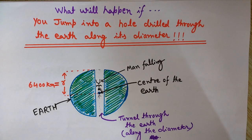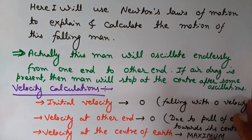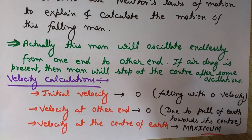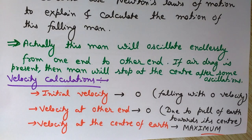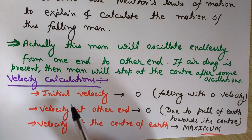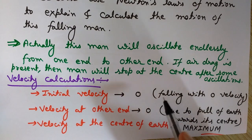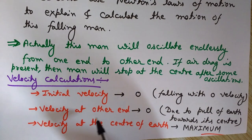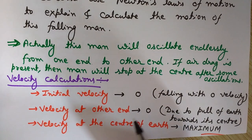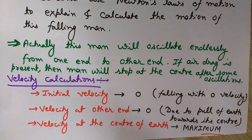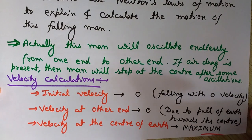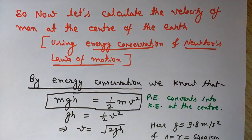Now let's see the mathematical analysis — calculating velocity at various points and time taken to reach them. We will calculate velocity at three points: the center and the two poles. The initial velocity at the starting pole is zero, the velocity at the other end is also zero due to earth's pull toward the center, and the velocity at the center of the earth is maximum.